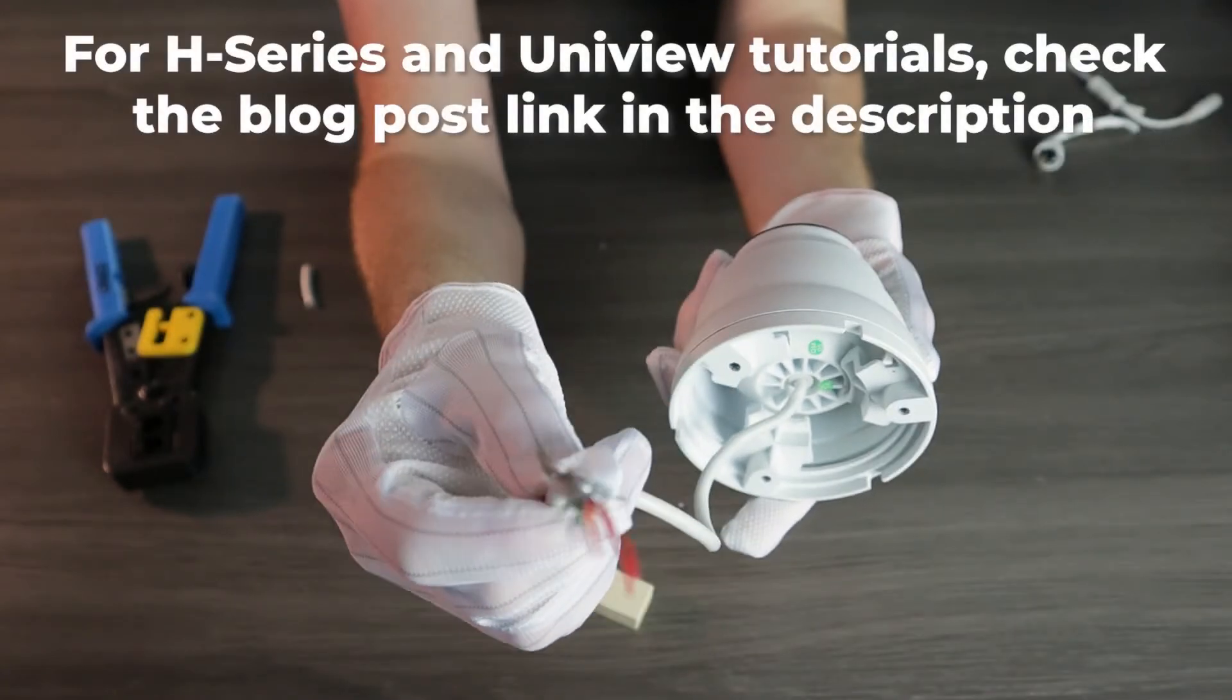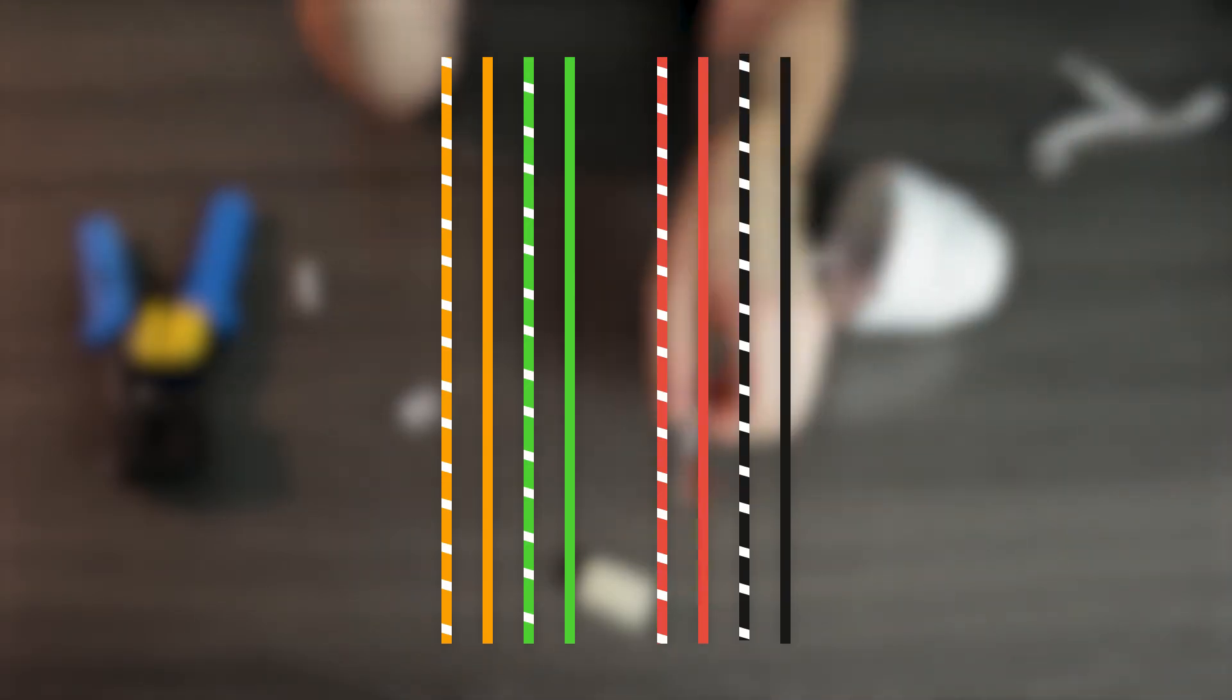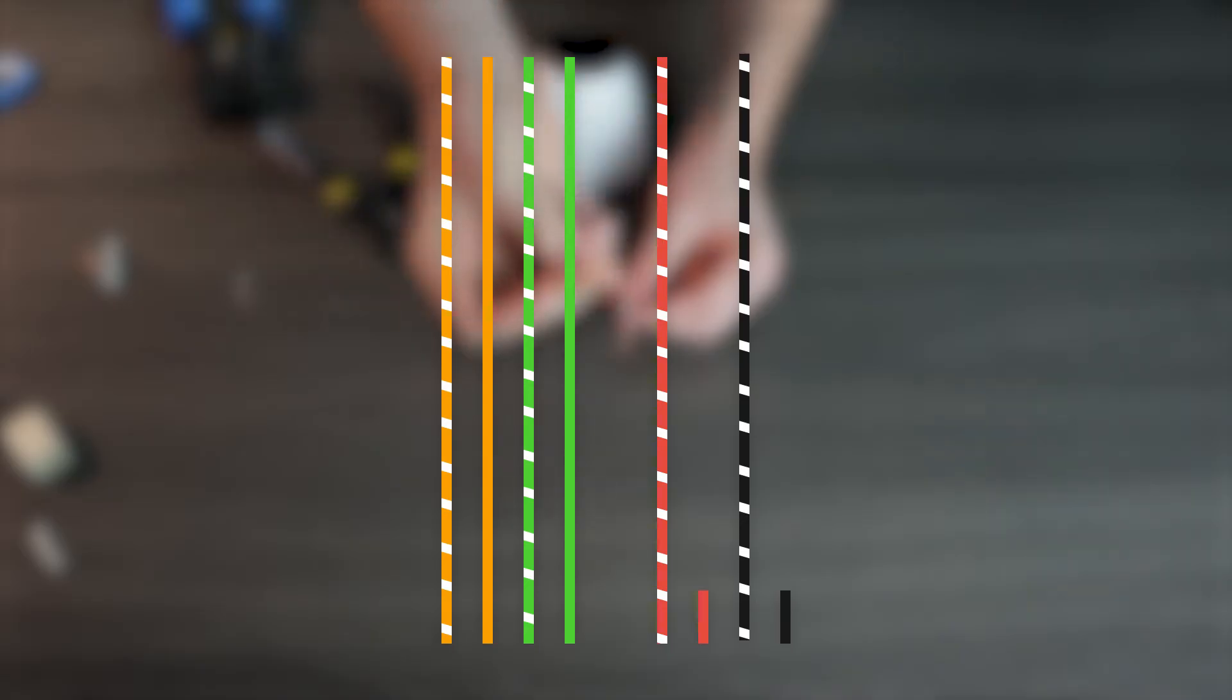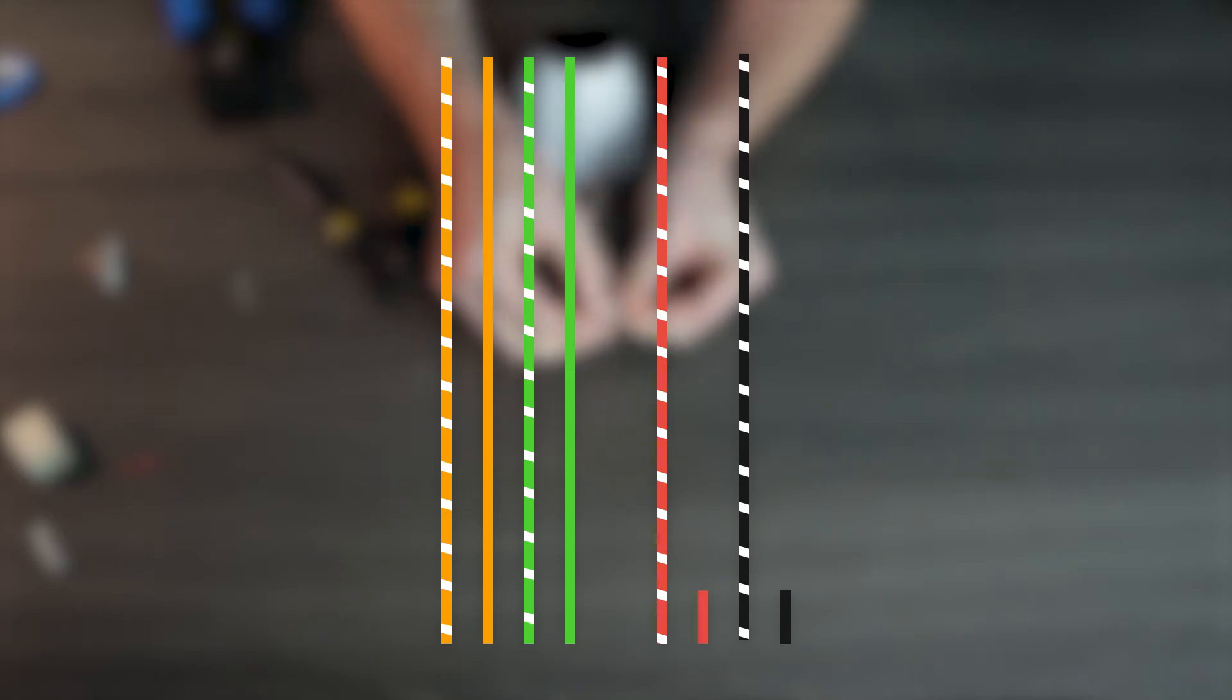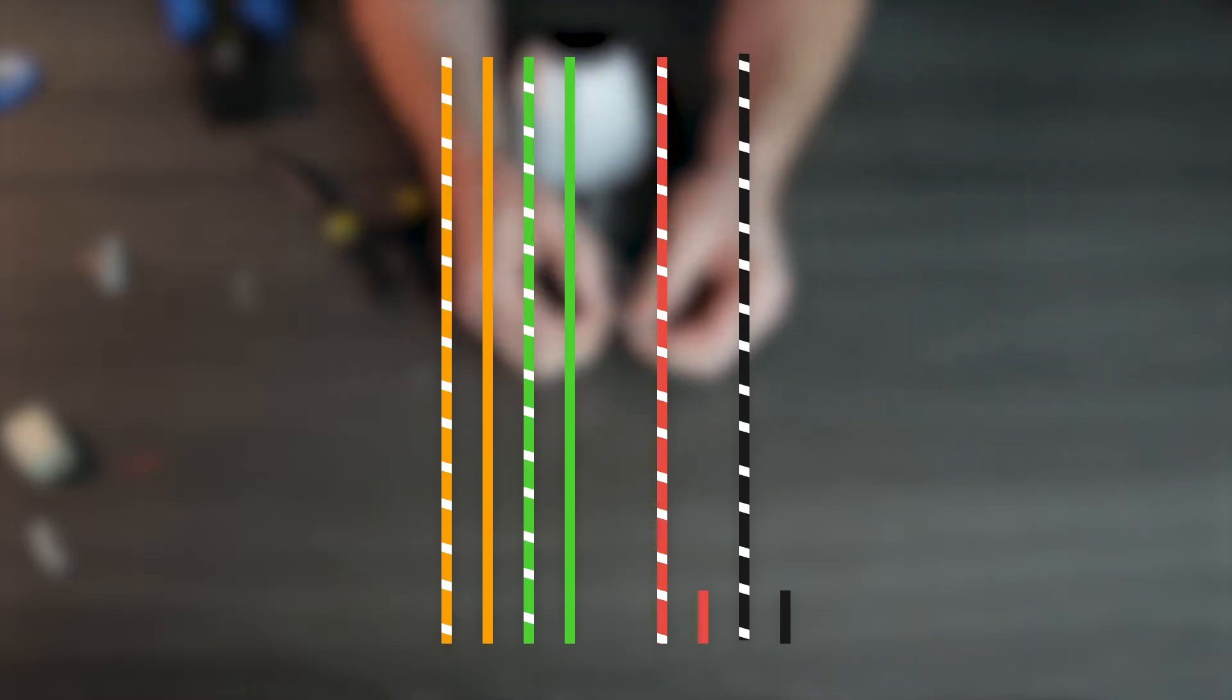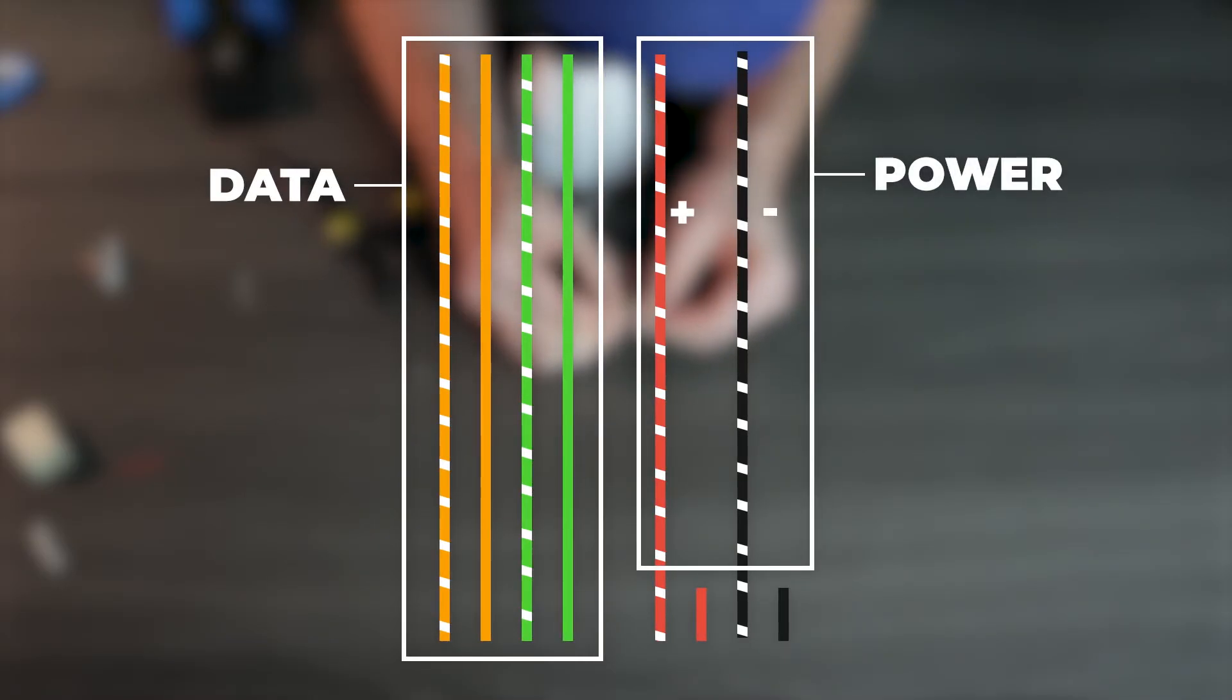Now here's where it gets a little tricky depending on which camera you have. The camera I have here is an R series camera and here we only have 8 wires total. Orange stripe and orange. Green stripe and green. But then we have red stripe and red and black stripe and black. If you're using power over ethernet, you can go ahead and cut off that red and black power wire because you won't need those. But now we are left with 6 wires instead of the standard 8. If you saw our last video about power over ethernet, you will remember that we only use 2 pairs of wire for data and 2 pairs of wire for power. In this case, we will still use 2 pairs for data. Orange stripe and orange and green stripe and green. But we will only use 2 individual wires for power. The red stripe for positive and the black stripe for negative.